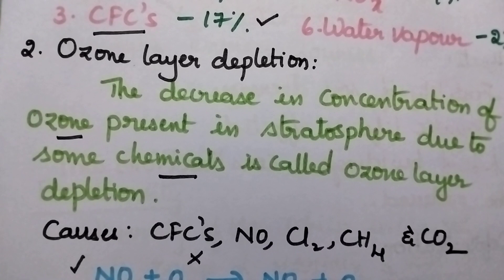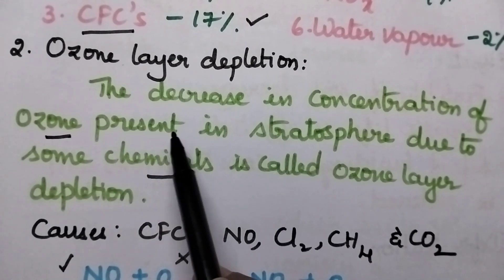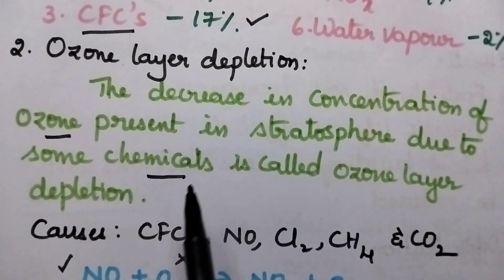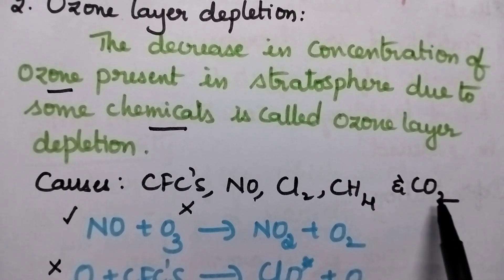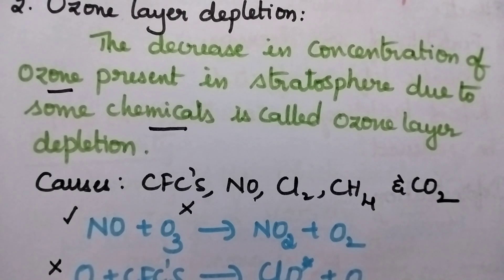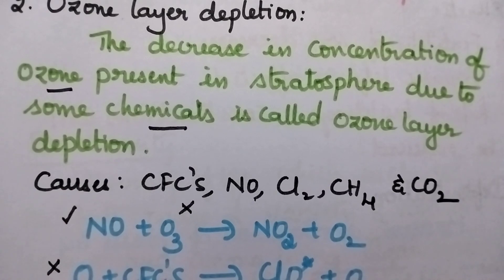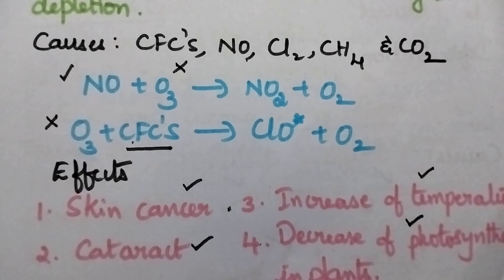Ozone layer depletion means there will be a decrease in the concentration of ozone present in the stratosphere because of chemicals. Especially chlorofluorocarbons, nitric oxide, chlorine, methane and carbon dioxide are responsible for the depletion of the ozone layer. Whenever nitric oxide is present, it directly reacts with ozone. Similarly, chlorofluorocarbons also directly react with ozone, causing a decrease in ozone concentration in the stratosphere. Because of ozone layer depletion, it causes skin cancer, cataract, an increase in temperature, and even photosynthesis in plants will be decreased.